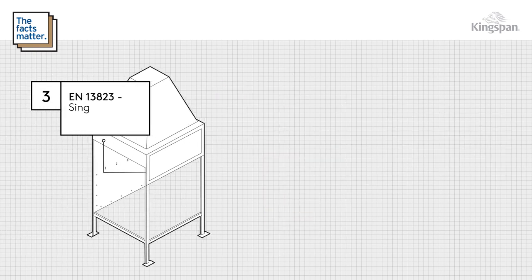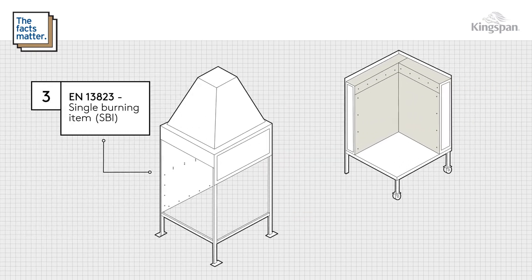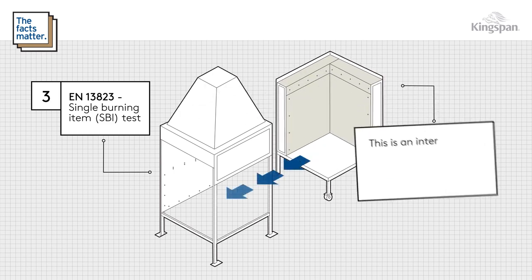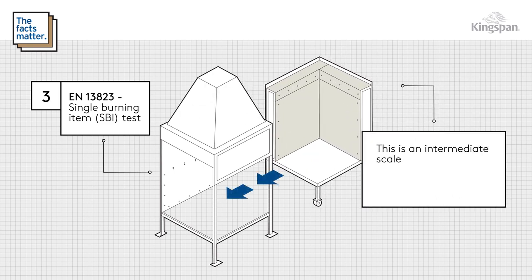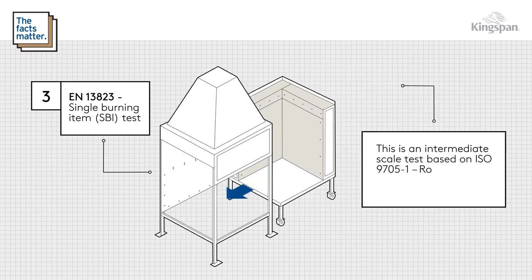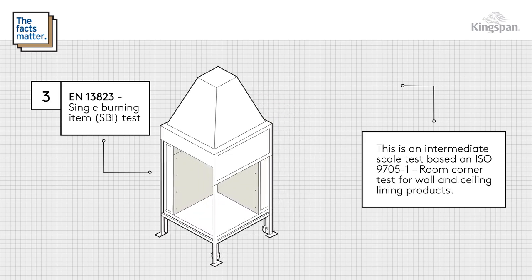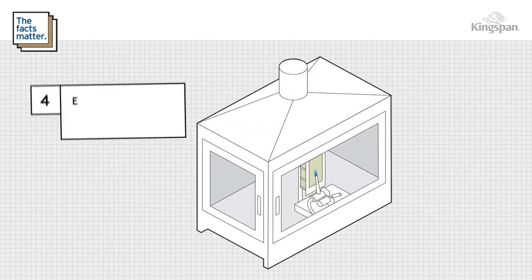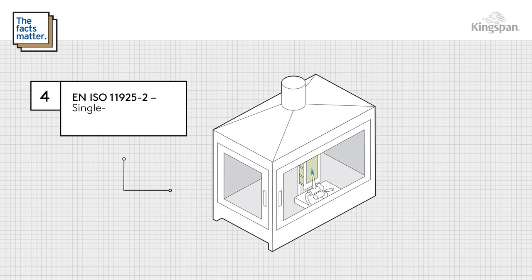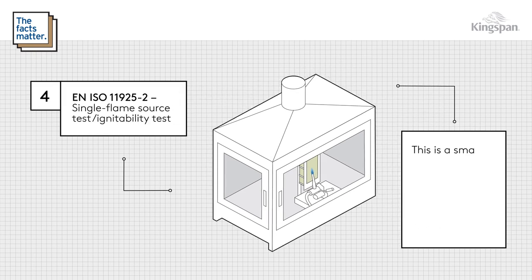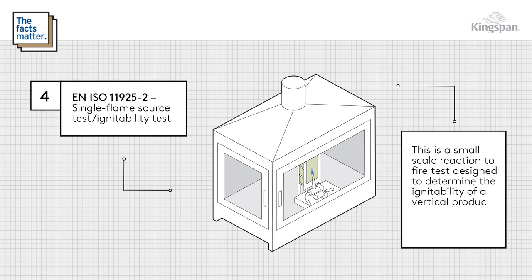EN 13823, the single burning item SBI test — an intermediate scale test based on ISO 9705 part 1, the room corner test for wall and ceiling lining products. EN ISO 11925 part 2, the single flame source test, ignitability test — a small scale reaction to fire test designed to determine the ignitability of a vertical product specimen when exposed to a small flame.